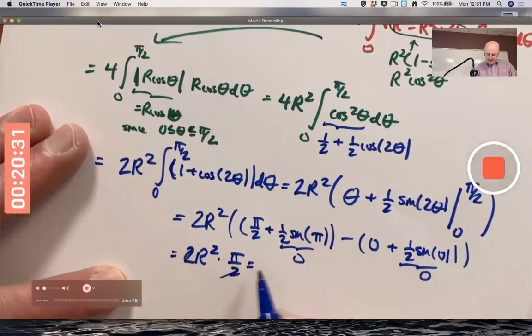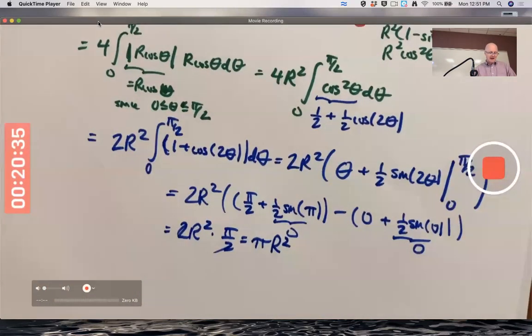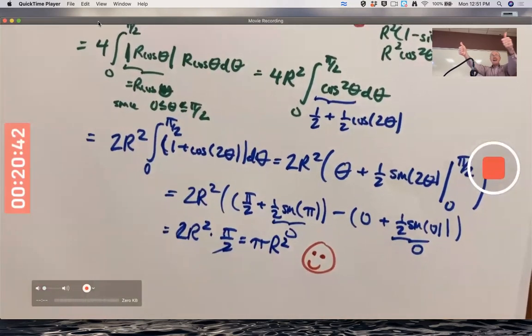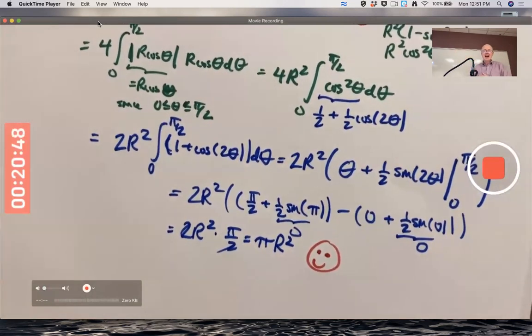So we're left with 2R² times π/2. The 2's cancel. Hey, there we go. πR². And we are very happy. Fun, don't you think? Fun, even. We got the right answer.